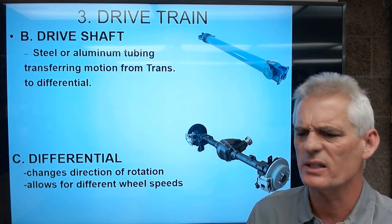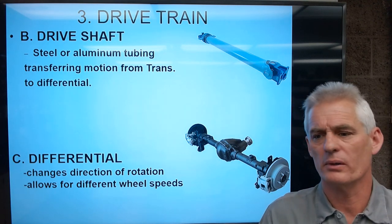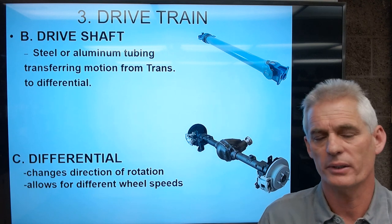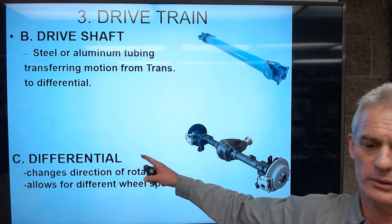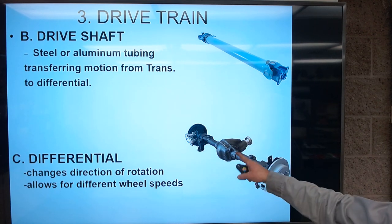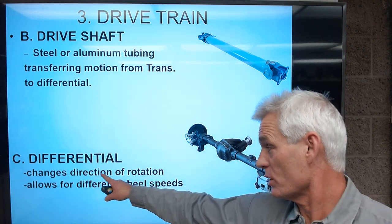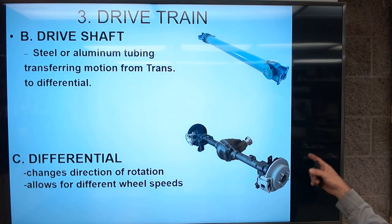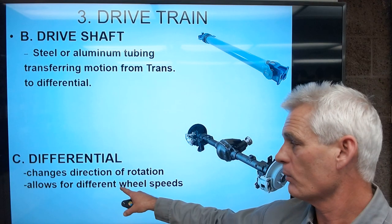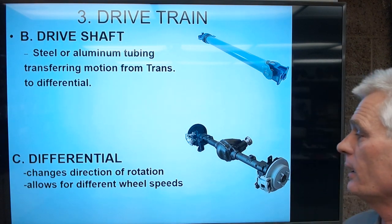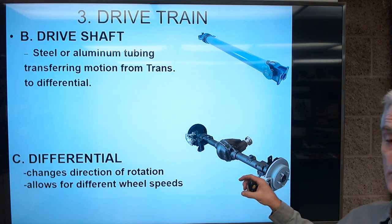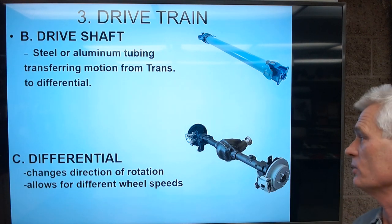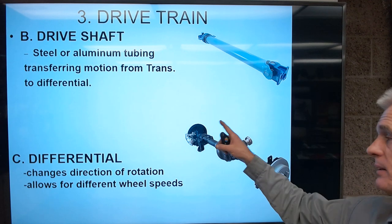To conclude part one, the differential changes the direction of rotation from the longitudinal spin of the drive shaft to the transverse spin where the wheels are — one wheel on each side. It also allows for different wheel speeds: one wheel can spin at a different speed than the other and still be driven. It provides gear reduction too — the drive shaft can spin about three times while the wheel spins once.